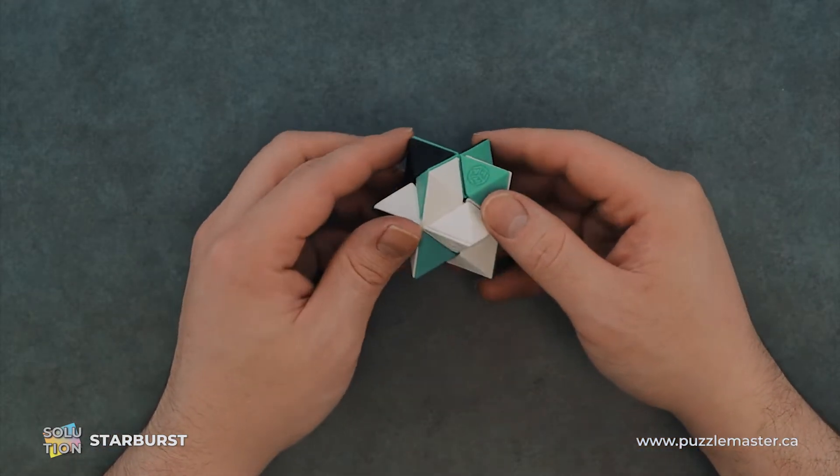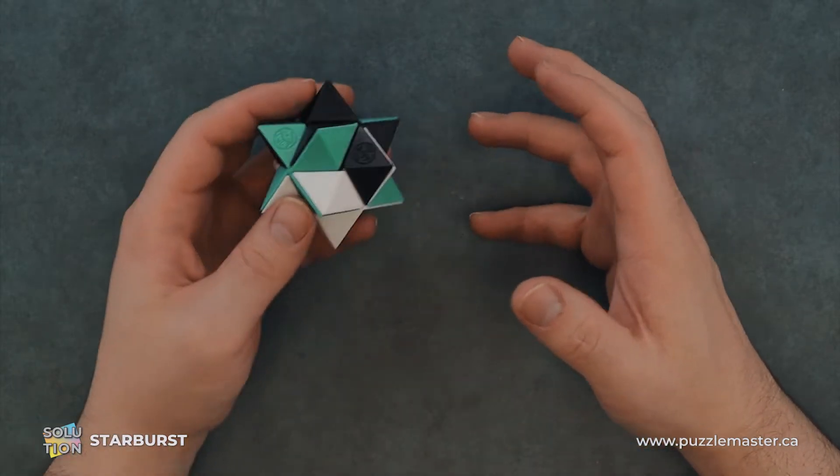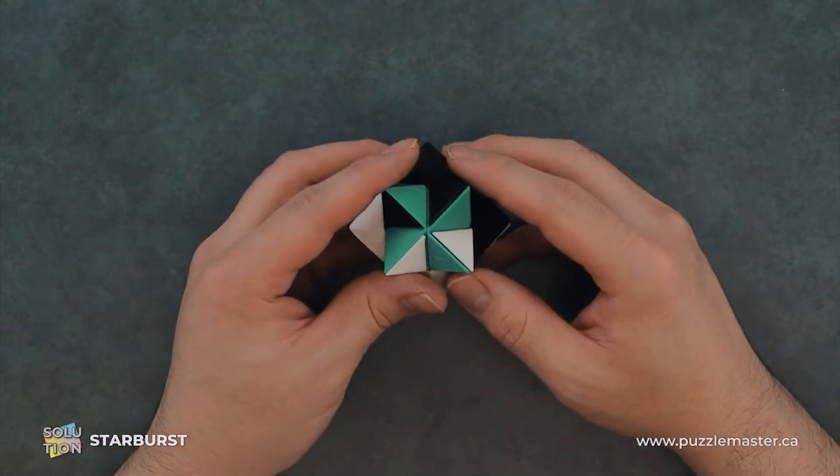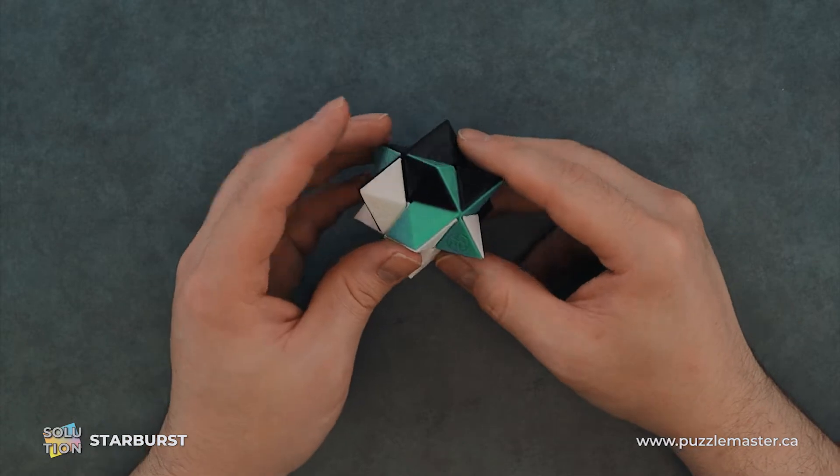So we have Starburst. It's a dexterity puzzle. That means we have lots of pieces and we're going to be trying to slide them together. But first we have to disassemble this guy.